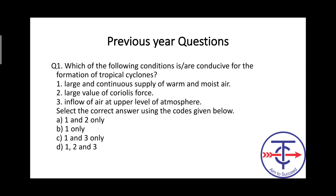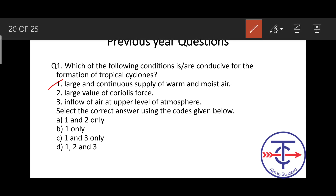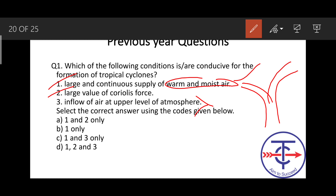Next question: 'Which of the following conditions are conducive for the formation of cyclone?' Number 1 — continuous supply of warm moist air: correct. Number 2 — value of Coriolis force: correct. Number 3 — inflow of air at upper level: incorrect — at upper level there must be outflow, not inflow. Divergence at upper level is required. So one and two are correct conditions. Divergence of air at upper level — that third option is wrong.